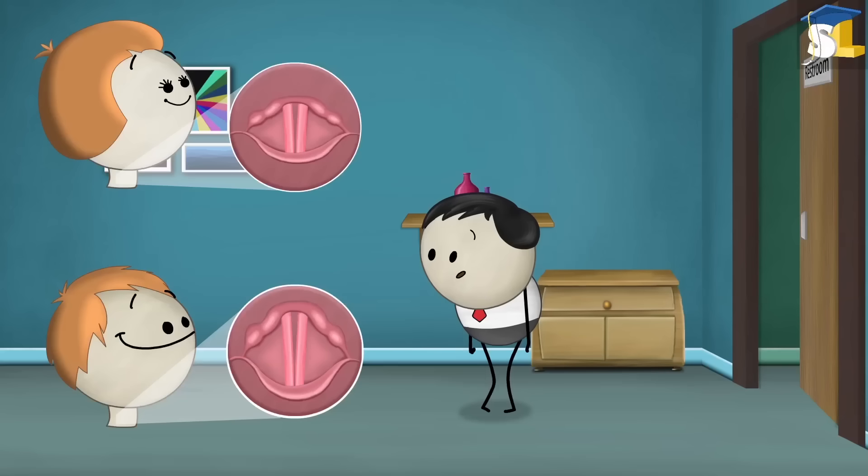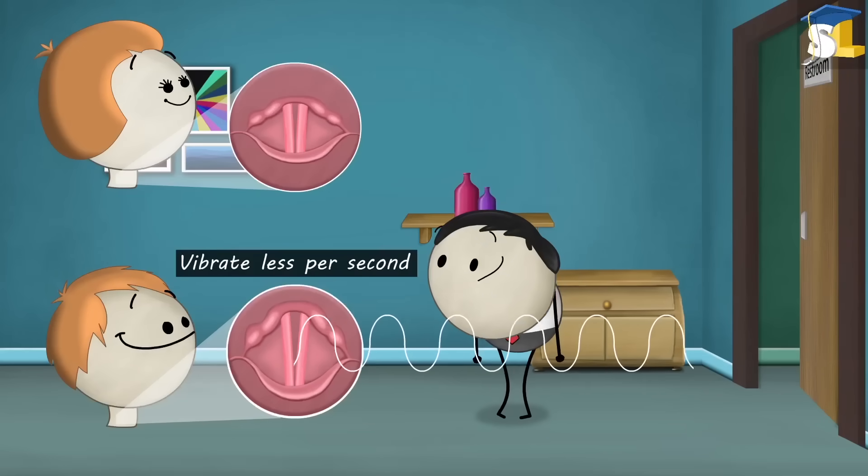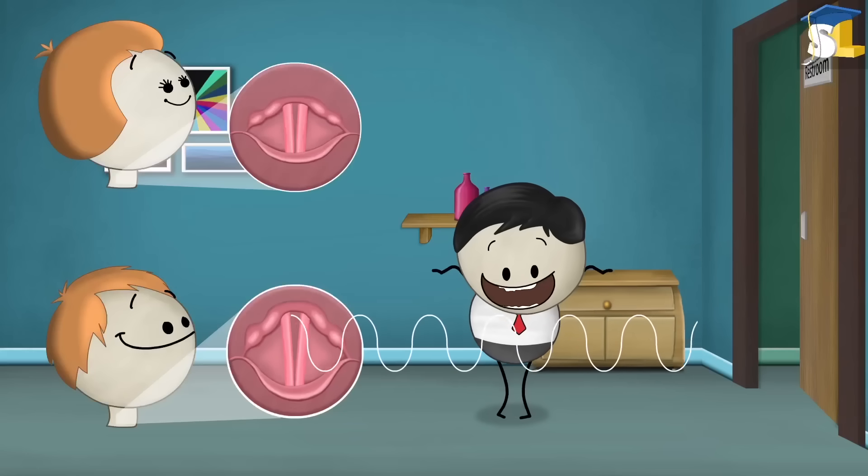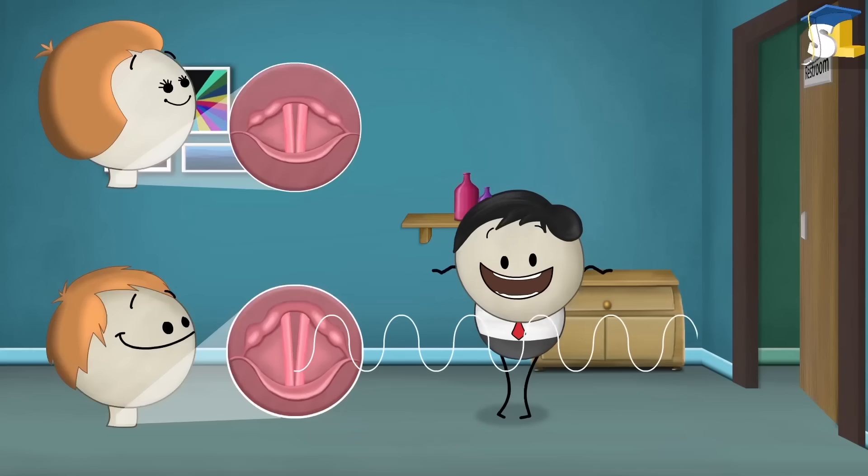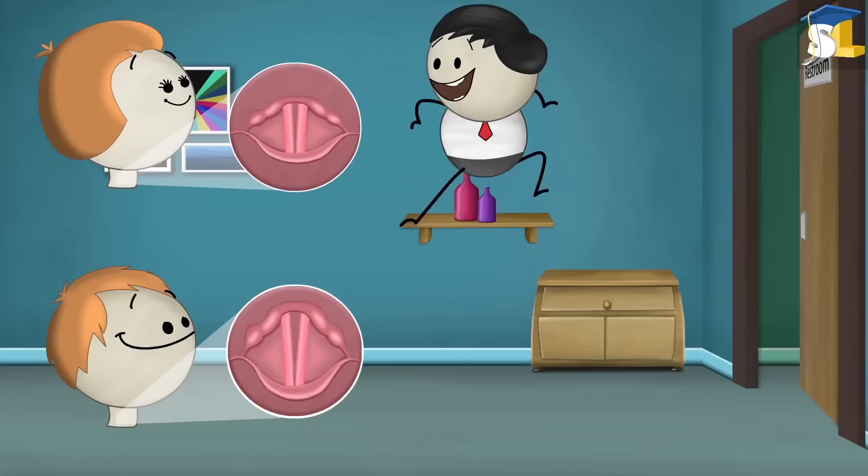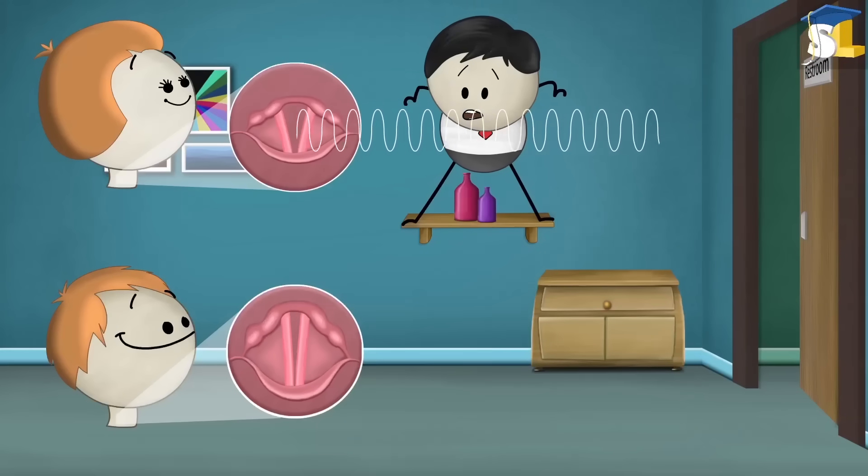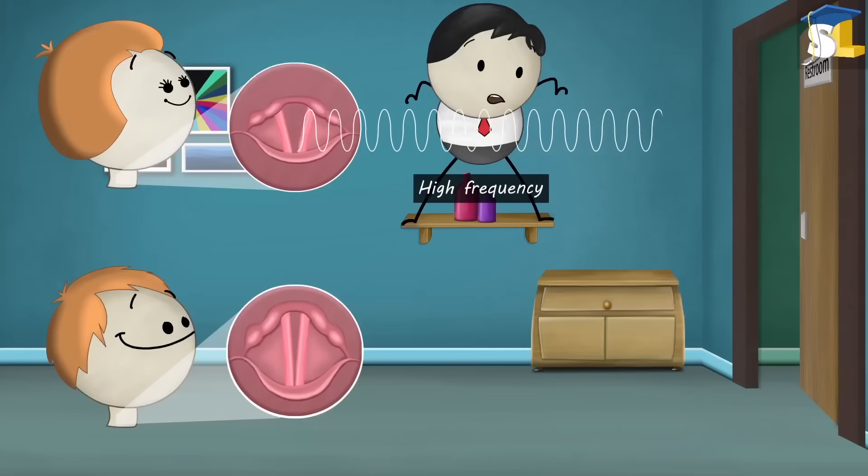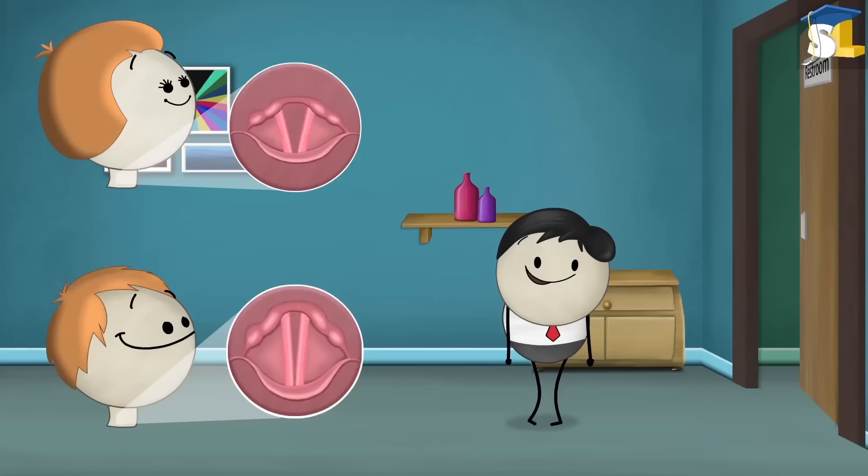As the vocal cords of a man are comparatively longer, they vibrate less per second, producing sound having low frequency. However, the vocal cords of a woman being short vibrate more per second, thus producing sound having high frequency. As the frequency of sound is higher, women have shriller voices than men.